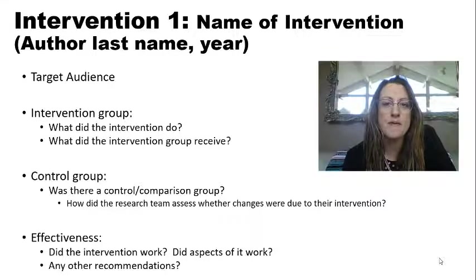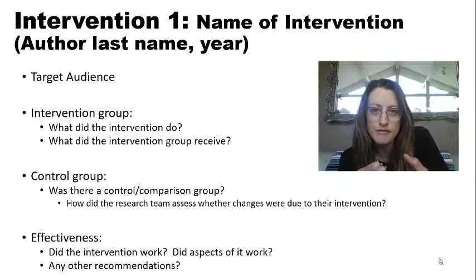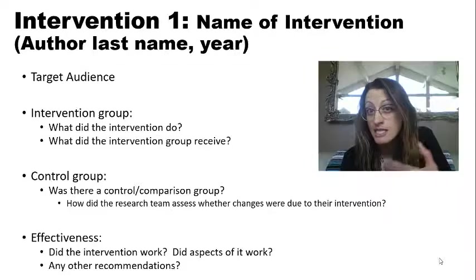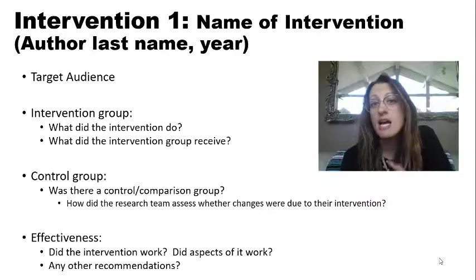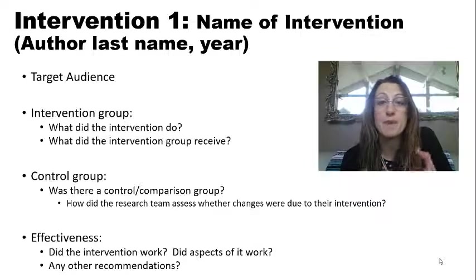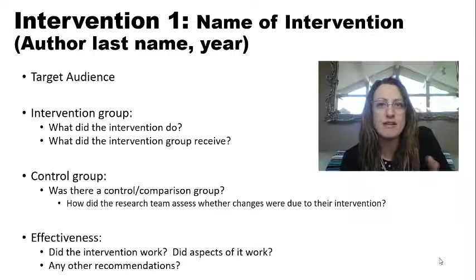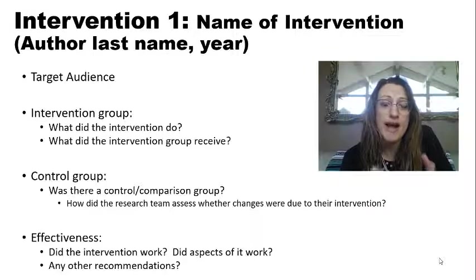When you are looking at intervention research, that's going to be in the section after your literature review where you describe the problem and the incidence. It's also part of a literature review where you're describing what past researchers, research teams, and policymakers have published that describes how they intervened.